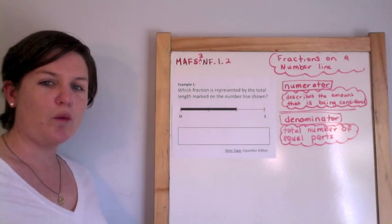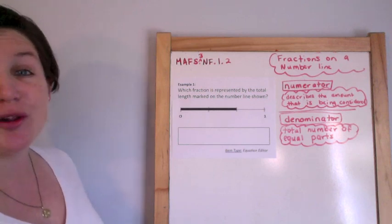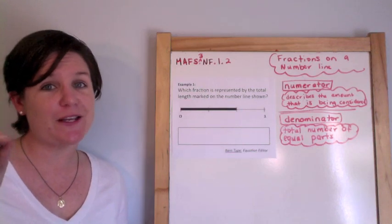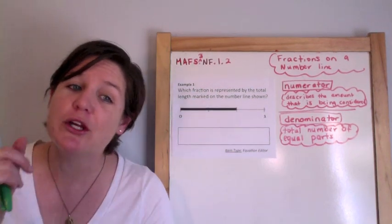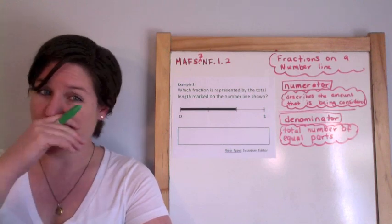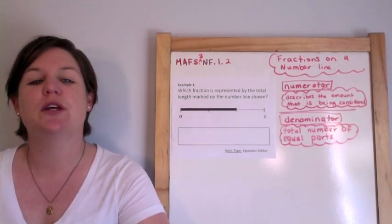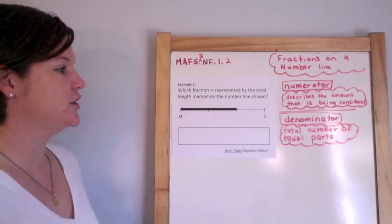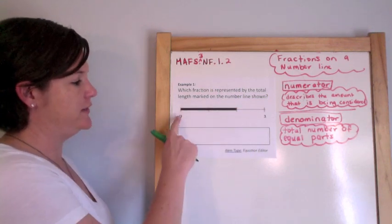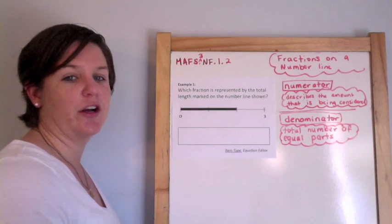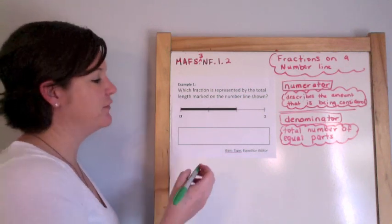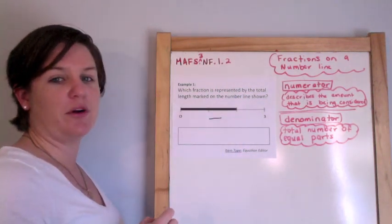Example 1. Which fraction is represented by the total length marked on the number line shown? Number lines are usually pretty hard for you kiddos and you teachers to teach and parents. So hopefully this video helps make a little bit more sense for how to do fractions on a number line. Here we have a fraction that is less than 1. We've got a shaded amount right here, and we've got 0 and we have 1.